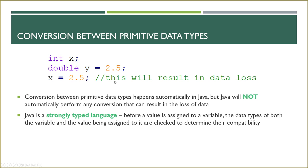The reason for that is Java is what we call a strongly typed language. Before a value is assigned to a variable, the data types of the variable and the value being assigned are checked to determine if they're compatible. So before 2.5 is thrown into Y in memory, Java checks: Y is a double, 2.5 is a double — these are okay. But when trying to throw 2.5 into X, X is an integer and 2.5 is a double — this is not going to work because we're going to lose data.